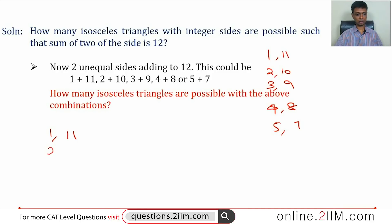I'm going to write these down: 1, 11; 2, 10; 3, 9; 4, 8; 5, 7. Now, we note this is an isosceles triangle. So 1, 11 are two sides of the triangle. The third side could be 1 or it could be 11. Are both of these possible triangles? 1, 11, 11 is a triangle. Sum of 1 plus 11 is greater than 11. 1, 1, 11 is not a triangle.